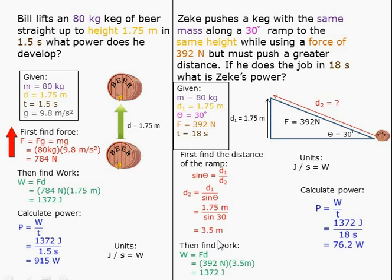D2 is 3.5 meters. Then I find work. I put in 392 newtons times 3.5 meters, and I get 1,372 joules.